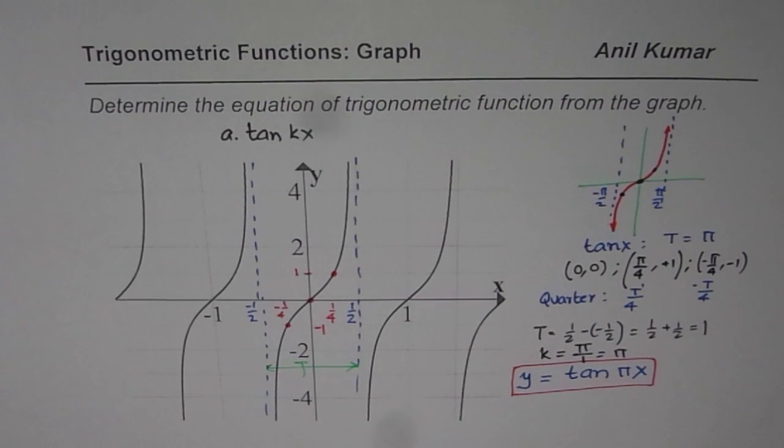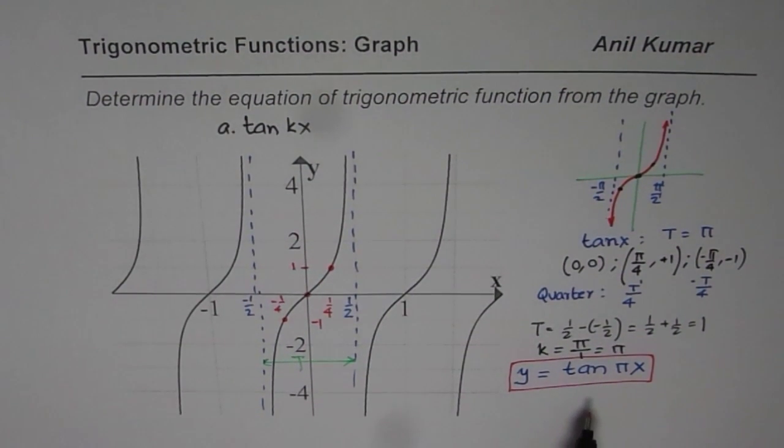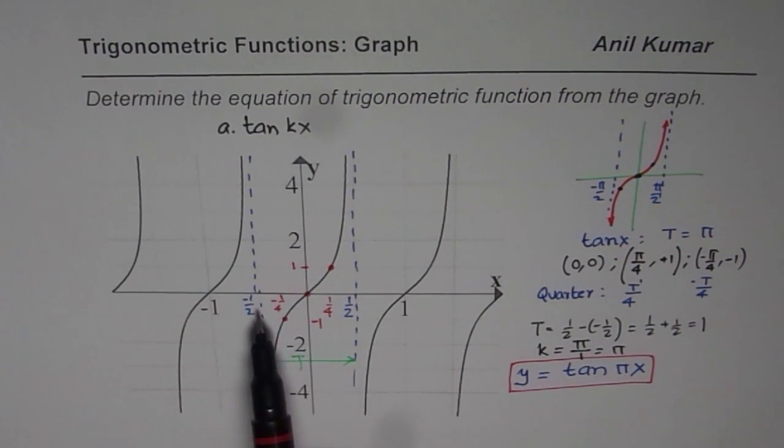Do you see that? And I hope you understand the strategy how we found it. So we found this equation by checking the values of these three critical points - these are the key points. Then the asymptotes gave us the time period. So these two things combined together can actually give you the function in tan. I hope that helps. Thank you and all the best.